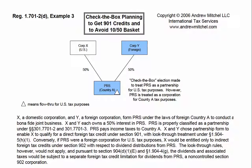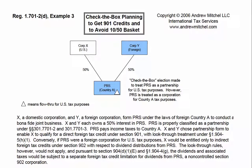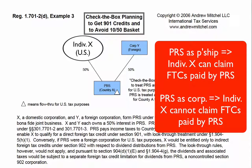This type of entity classification planning is often more important for individuals owning interests in foreign entities, because individuals cannot qualify for deemed paid foreign tax credits under Section 902 where PRS is classified as a corporation. If Corp X were instead individual X, who is a U.S. person, the decision to treat PRS as a partnership versus as a corporation results in individual X being able to claim foreign tax credits or not being able to claim foreign tax credits for income taxes paid by PRS.